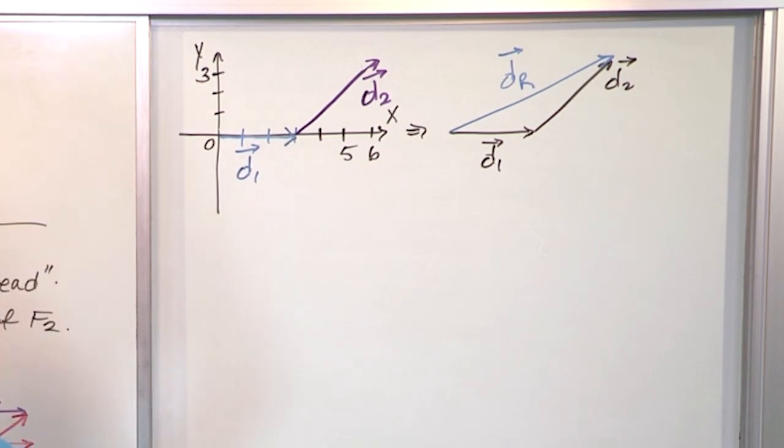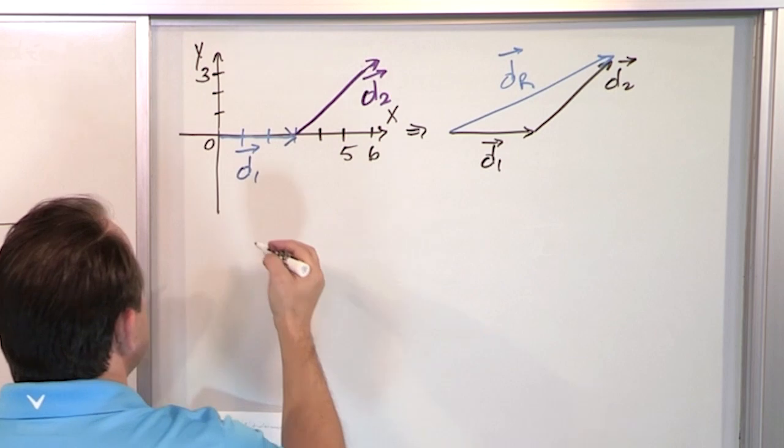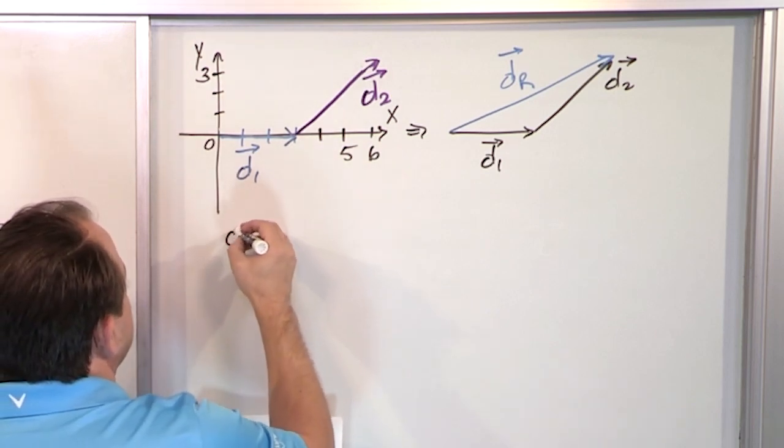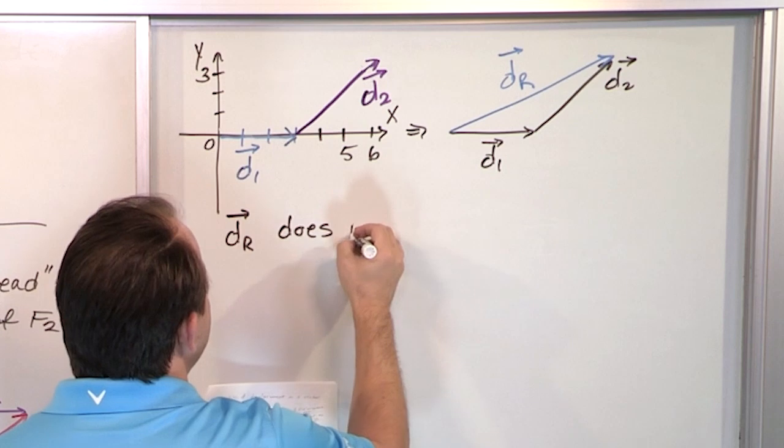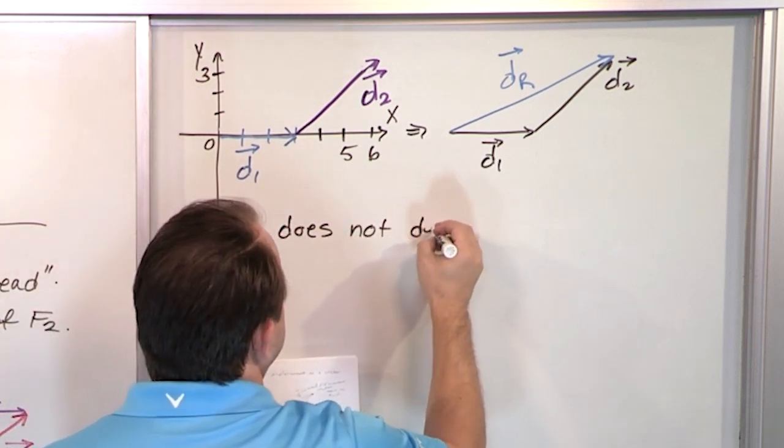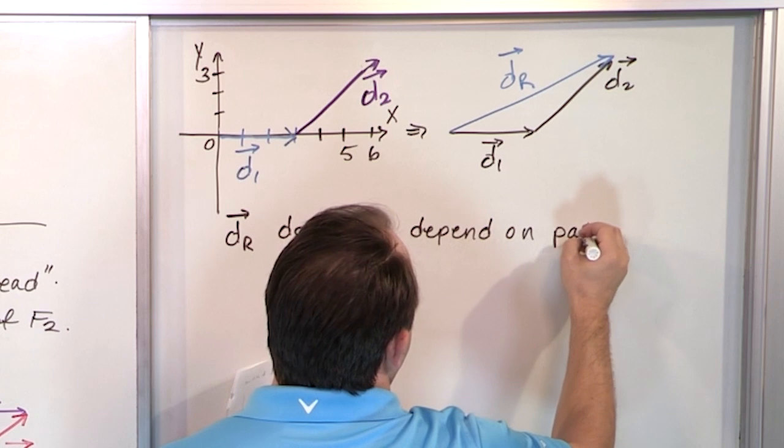So before we were talking about forces, adding forces. You can add displacements, and the resultant you get is going to represent the entire trip. Now, when we're talking about walking to my mailbox, let's say my mailbox is over here. The resultant vector does not depend on path taken.